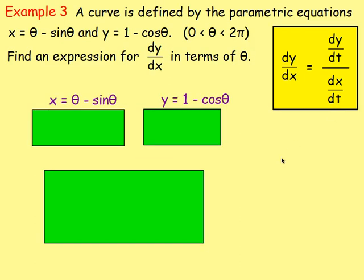Example 3. A curve is defined by the parametric equations x equals theta minus sine theta, and y equals 1 minus cos theta, for theta between 0 and 2 pi. Find an expression for dy/dx in terms of theta. X is in terms of theta, y is in terms of theta. dy/dx equals dy/dt divided by dx/dt, but this time the parameter is not t — it's theta. So dy/dx would be dy/d-theta over dx/d-theta, and we need to differentiate both x and y with respect to theta.